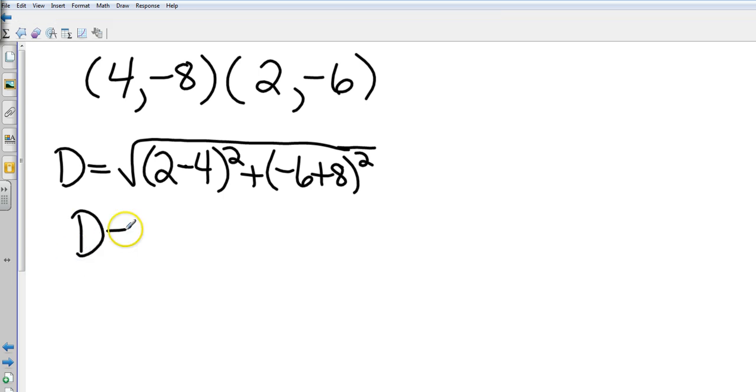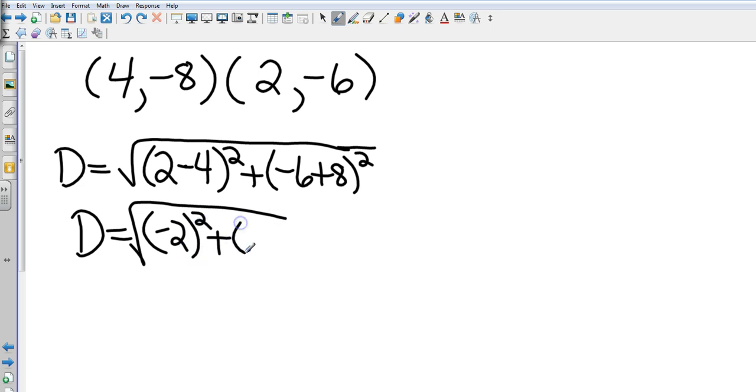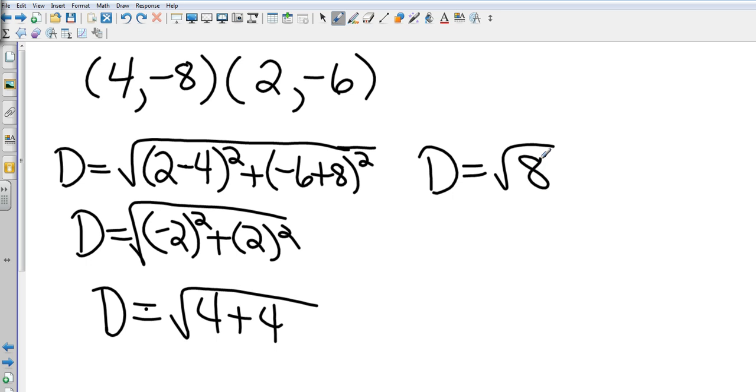Okay, 2 minus 4 squared is going to be what? Okay, negative 2 squared plus negative 6 plus 8, positive 2 squared. Negative 2 squared is 4, and 2 squared is 4. So my distance is the square root of 8, right? No. Simplified radical form. What do we have to do here? Tyler? Which is not a whole number, so that doesn't help me. I have to simplify this. How did I simplify? Find 2 square roots that you can multiply to get 8.